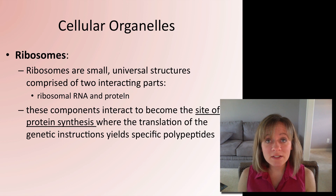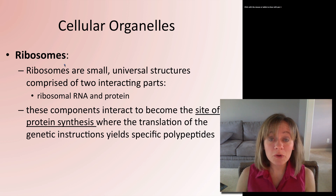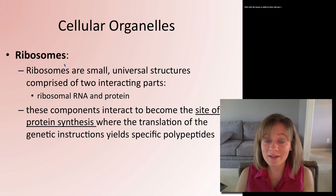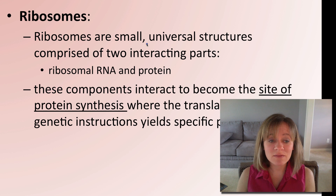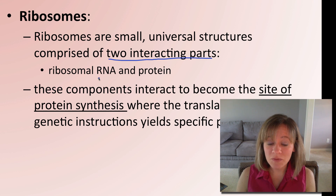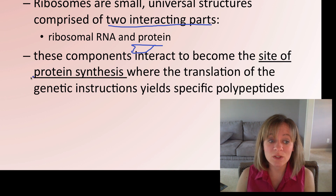Let's take a look at all the different organelles inside eukaryotes. First, ribosomes. Ribosomes are in both prokaryotes and eukaryotes, which should tell you something about their evolution and their important functions. They are small and universal — found in all three domains of life. They're composed of two interacting parts: ribosomal RNA and protein. These components interact to become the site of protein synthesis — ribosomes make proteins.